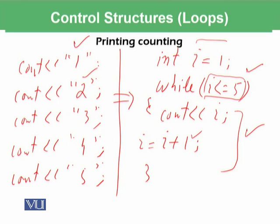Then again it checks the condition — i is less than or equal to 5 — so 3 is less than or equal to 5, condition is true. The 3 will be printed, 4 will be printed, 5 will be printed, and then i will become 6. When i becomes 6 and the condition is checked, 6 is less than or equal to 5 is false. When the condition is false, cout i and i is assigned i plus 1 will not be executed, so counting until 5 is printed.